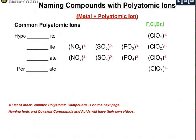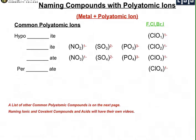Let's take a look at naming compounds when they contain a polyatomic ion. Because polyatomic ions are generally negatively charged, they combine well with metals. Typically, you'll have a metal combining with a polyatomic ion. Before we talk about naming that, we have to learn the names of the polyatomic ions. Some common polyatomic ions have a little bit of an order to them to make them simpler to remember, while others have unique names and you just have to memorize them.